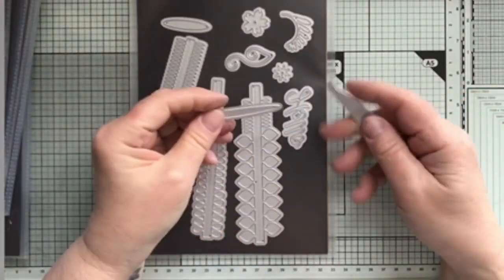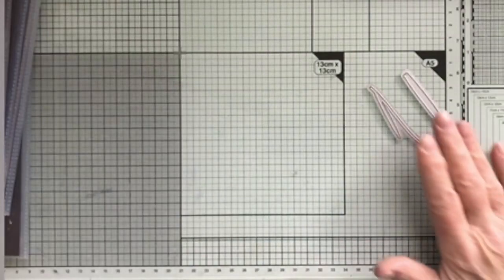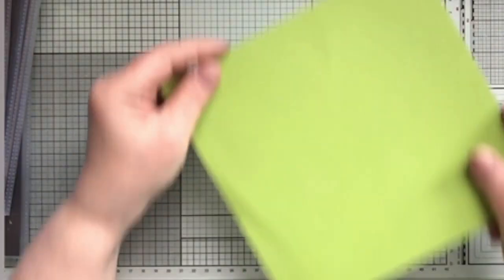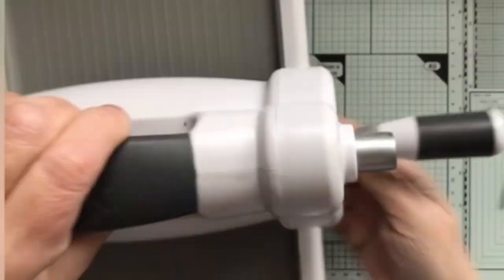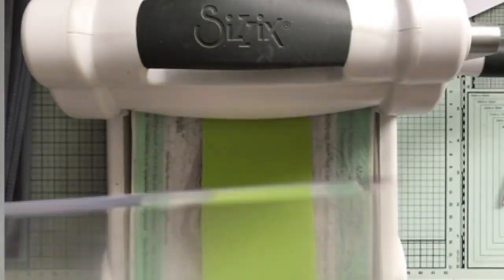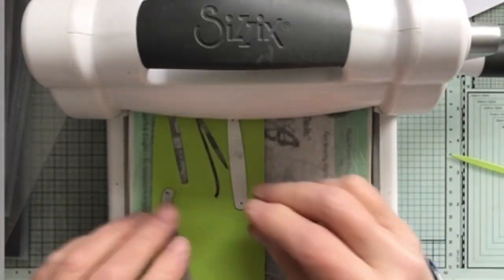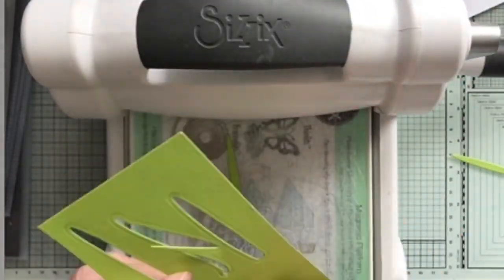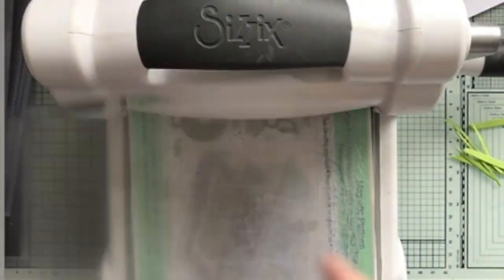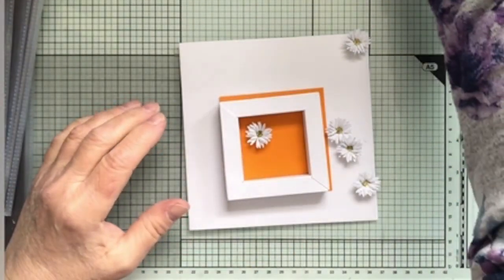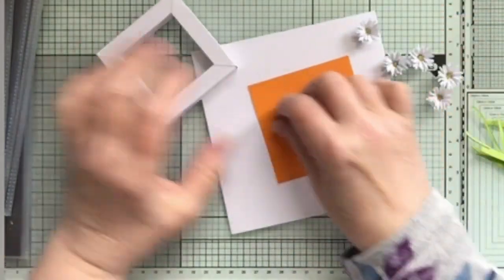This die set has also got these little leaves. So I thought we would cut out some little leaves in a green to find something that goes nice. I think that goes nice with the orange. Let's get this stuff onto here first.